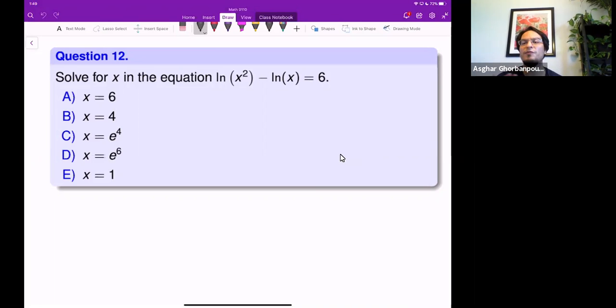In these cases, first make left-hand side and right-hand side one log. In other words, use the properties of ln and make one term. Here, left-hand side, we use the property that ln of a minus ln of b is equal to ln of a over b.